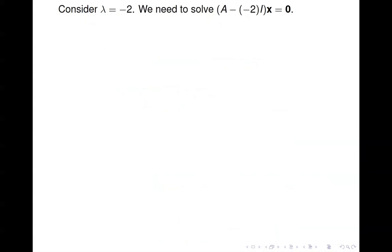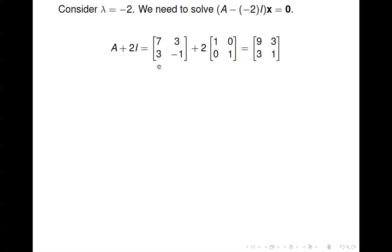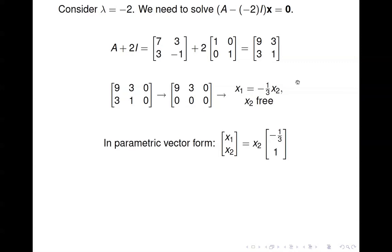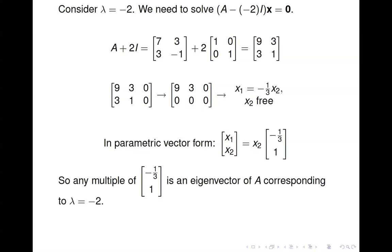Now for the other eigenvalue, lambda equals negative 2. We solve A minus lambda I times x equals 0 for lambda equals negative 2. So we compute A minus (-2)I, which is just A plus 2 times the identity. We set up the homogeneous system, do one row operation, the second row goes away, we get a free variable, and here's our solution. Writing it in parametric vector form, any multiple of the vector (-1/3, 1) is an eigenvector of A corresponding to the eigenvalue negative 2.